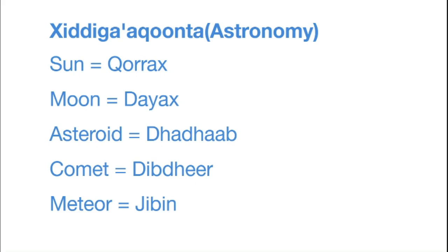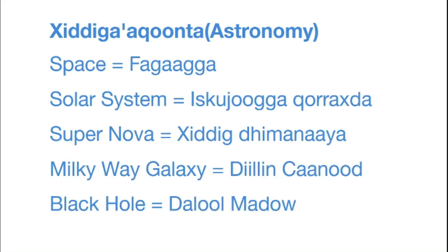Astronomy is hiddiga'aqonta. Sun is qurrah. Moon is dayah. Asteroid is dhadab. Comet is dibdhar. Meteor is jibin.